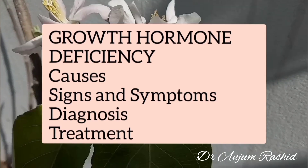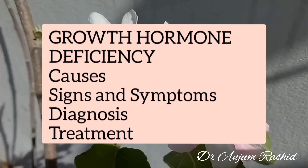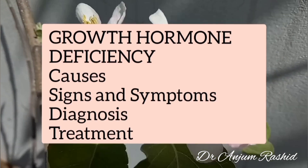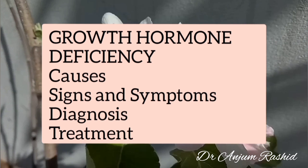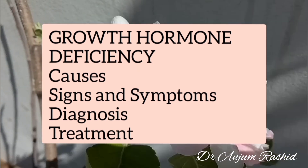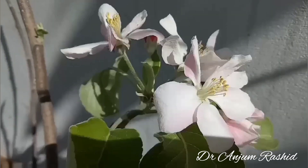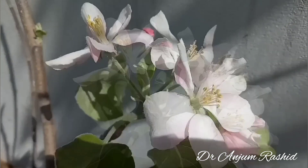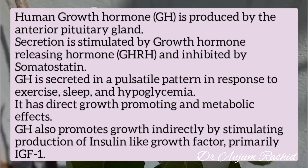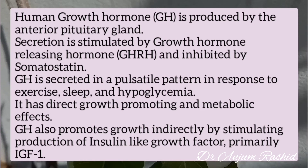Welcome to Pediatrics and Endocrinology. This video is about growth hormone deficiency, covering causes, signs and symptoms, diagnosis, and treatment. Human growth hormone is produced by the anterior pituitary gland. Secretion of growth hormone is stimulated by growth hormone releasing hormone and inhibited by somatostatin.